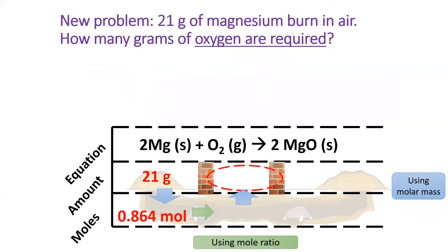All right, now let's ask a different question. How many grams of oxygen are required to burn 21 grams of magnesium? The first conversion step will be the same, but pause the video and see if you can fill in the rest.